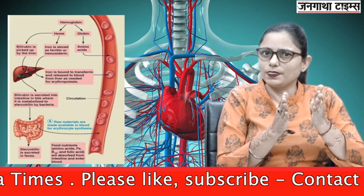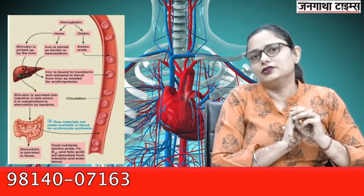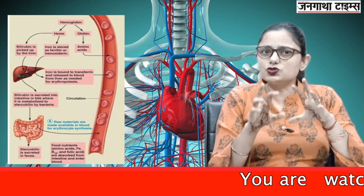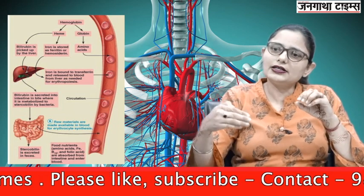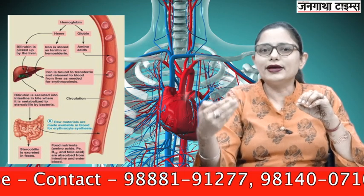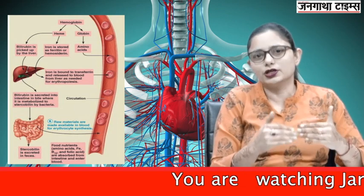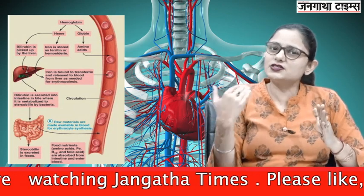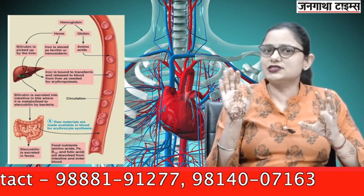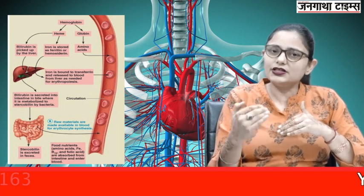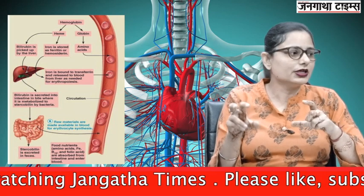Now, what happens to the heme part? Heme is a porphyrin ring with an iron atom in the center. The iron molecule is released from the heme, re-enters the circulation, and goes to the bone marrow where it is reutilized for the formation of new RBCs. The rest of the heme is first converted to biliverdin, then to bilirubin. This bilirubin enters the liver and is secreted in bile. The bile enters the small intestine, where bilirubin is converted to stercobilin, which is excreted in feces and gives feces their brown color.